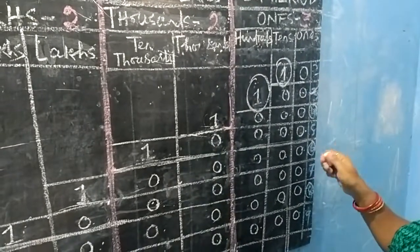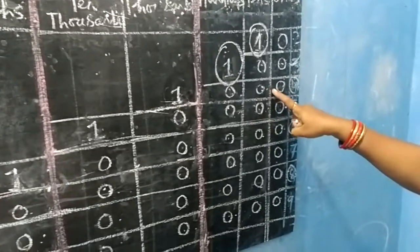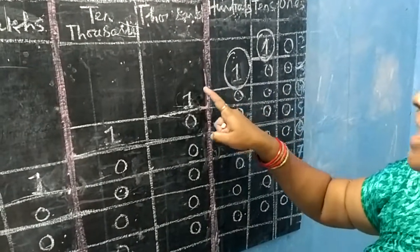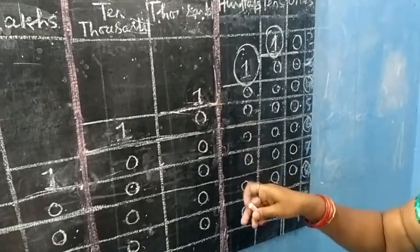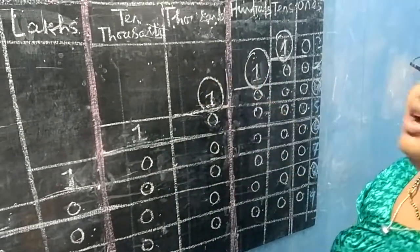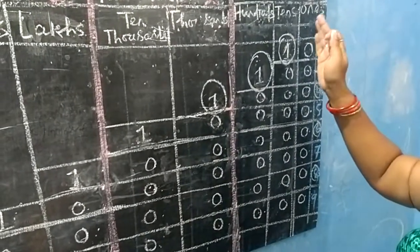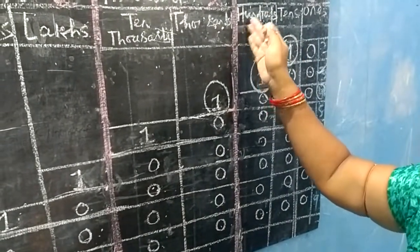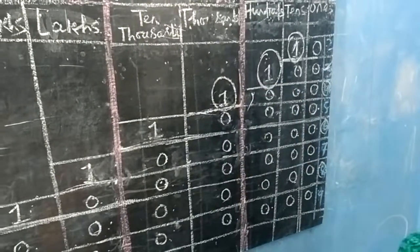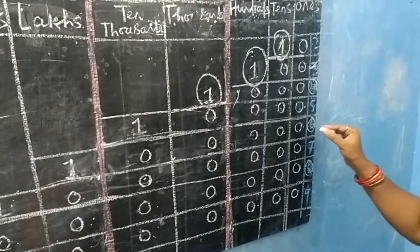Then we write a 4-digit number: 0 1s, 0 10s, 0 100s and 1 1000s. Here, the place value of 1 is 1,000s. We also separate 1s from 1000s — we put a comma and speak 1,000s.